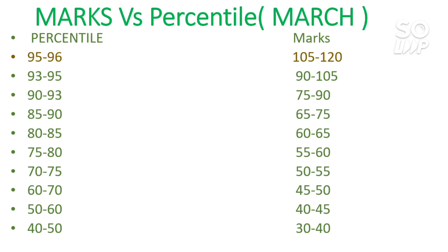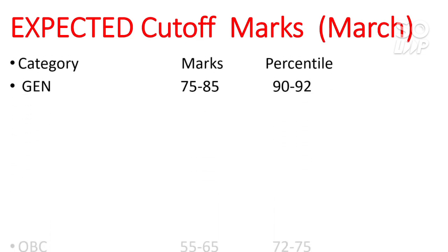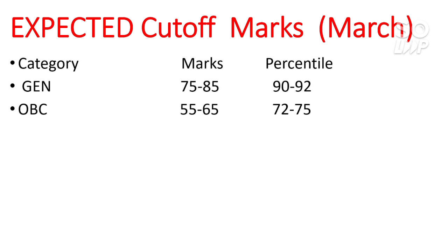Now I will discuss the category-wise expected cutoff marks and percentile for the March session. For General category, you need to score 75 to 85 marks, and your percentile cutoff will be 90 to 92. The percentile will remain the same across attempts, but the marks will vary depending on the difficulty level of the exam.